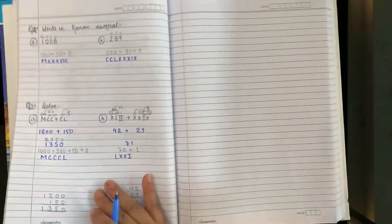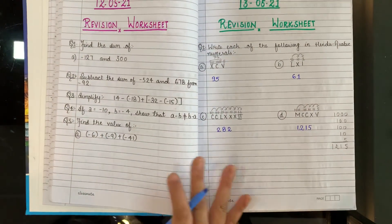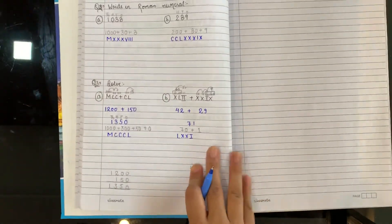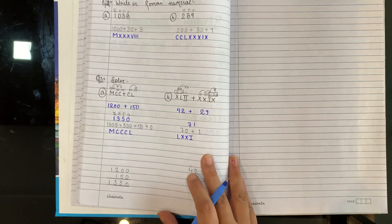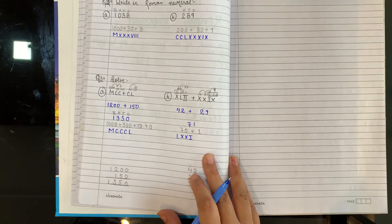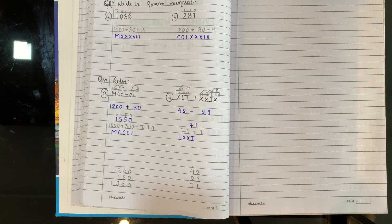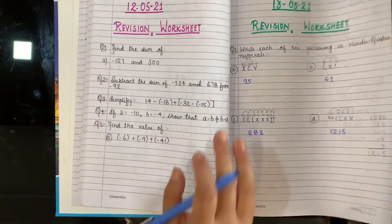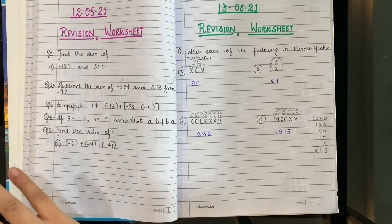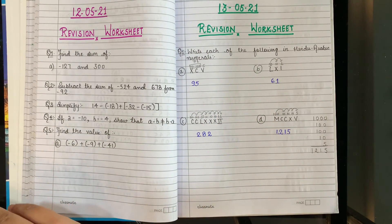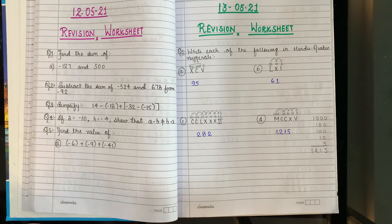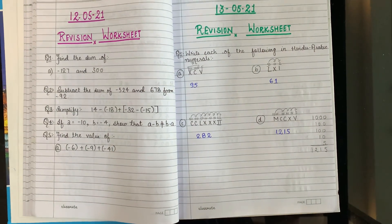So this is your revision worksheet children, for roman numerals. You have to complete this worksheet. Practice it very nicely. If there is any query, you can send me a voice note. Understand everything thoroughly, so that you do not make any mistake in your formatives. So now we are done with the revision also, we have done sufficient revision for roman numerals. Now you have to practice it yourself. So keep practicing. Bye bye and take care.